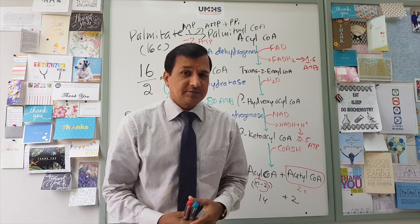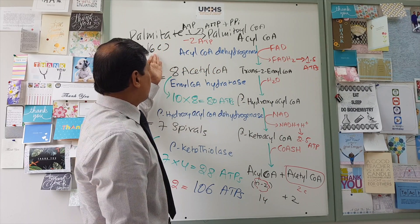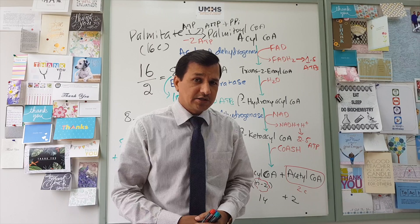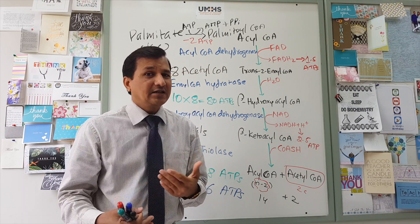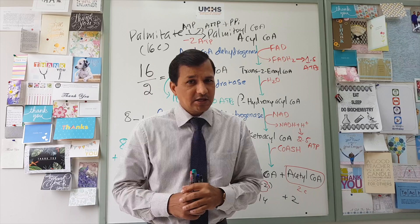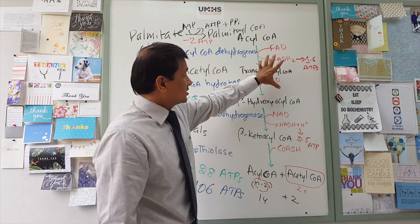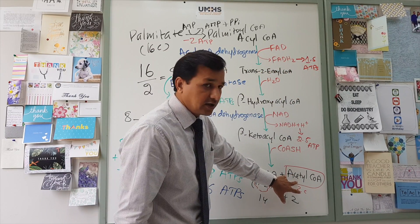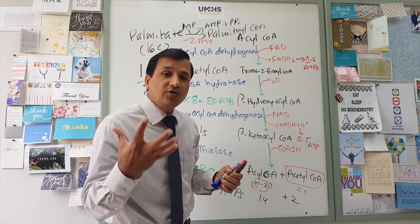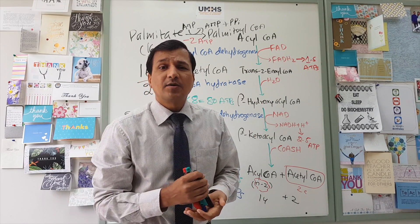Now suppose the fatty acid is stearate, which is activated into stearoyl-CoA — an 18-carbon fatty acid. Since 16-carbon palmitate gives 106 ATPs, for the 18-carbon fatty acid you just need to add 1 more spiral and 1 more acetyl-CoA. The difference between 16 and 18 is 2 carbons, meaning 1 additional acetyl-CoA and 1 more spiral. That additional spiral gives 4 ATPs (from FADH2 and NADH) plus 10 ATPs from the extra acetyl-CoA, totaling 14 additional ATPs.